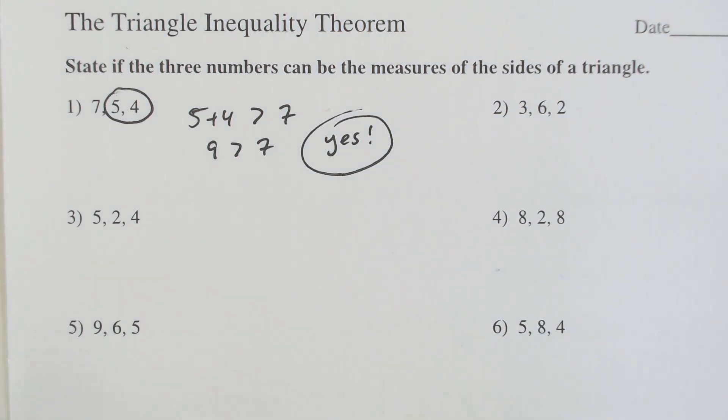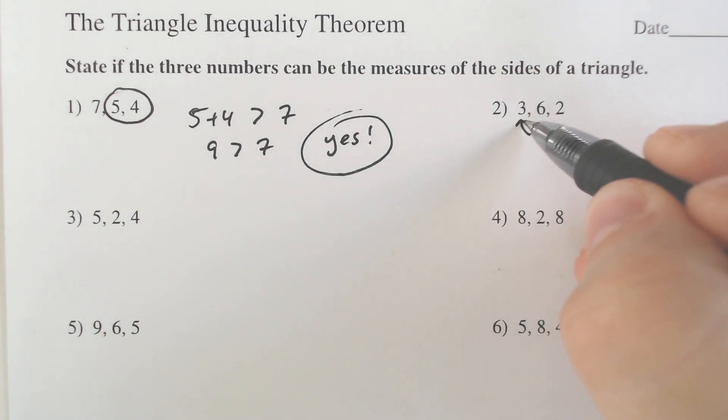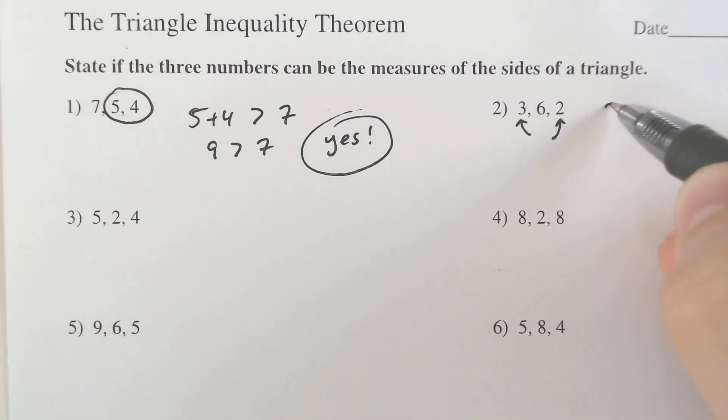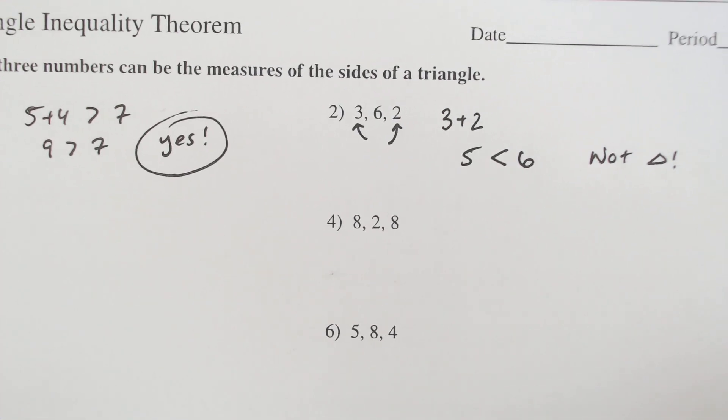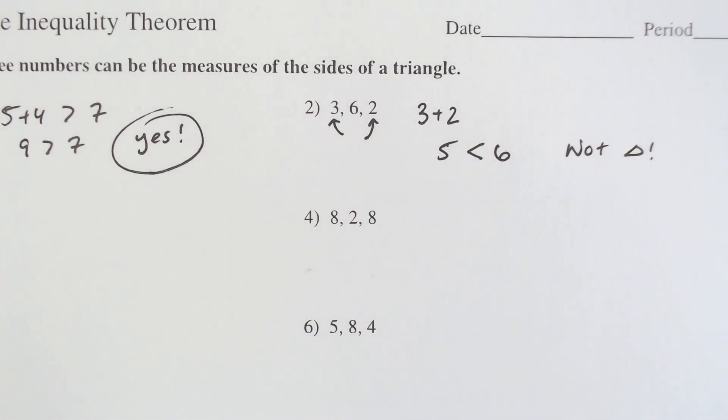So that's all you have to do is look at the two shorter sides. So like here, we have a 3 and a 2. 3 plus 2 is not bigger than 6. It's actually less than 6. So because of that, this cannot be a triangle. And here's why it cannot be a triangle.